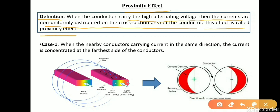As we can see in the figure, this is the cross-section area of the conductor. We can see the red zone — the red zone is nothing but the current density, meaning the current is concentrated in the outer areas of the conductor. This effect is nothing but proximity effect.